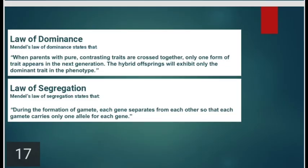Law of Dominance: When parents with pure contrasting traits are crossed together, only one form of that trait appears in the next generation. The hybrid offspring will exhibit only the dominant trait in the phenotype.